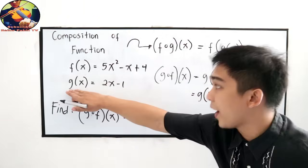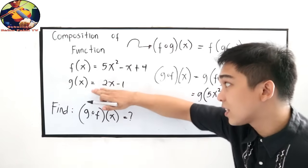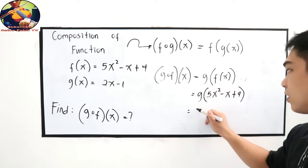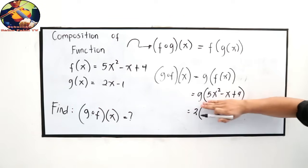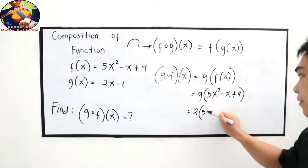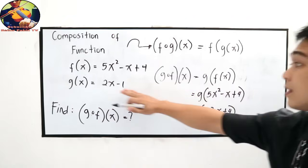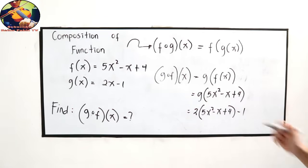We have g of x. All the x's in this expression, we replace with this. So we have 2 times our value, 5x squared minus x plus 4, then minus 1.